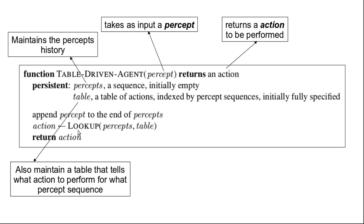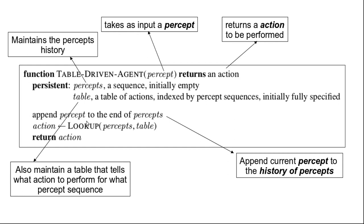The lookup table tells the agent what action needs to be performed based on the percept sequence. For each percept sequence, the corresponding action is listed in the table. The computation is only two lines of pseudocode. The first step is to append the current percept — which was the input to the program — to this history of percepts, building up the percept sequence.